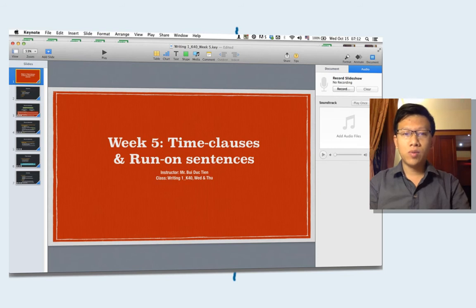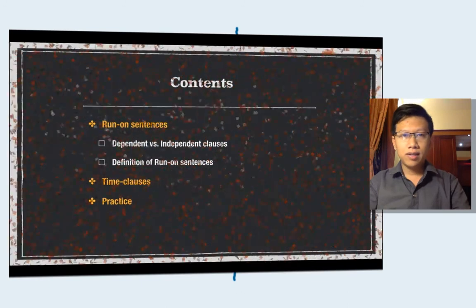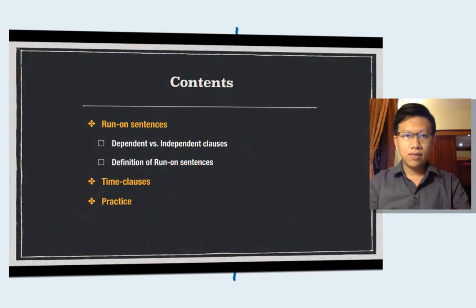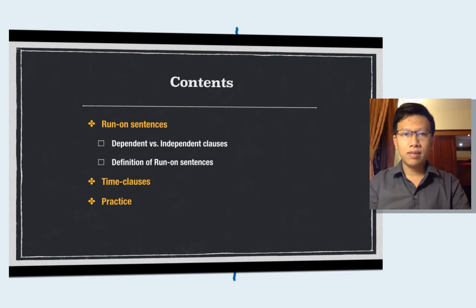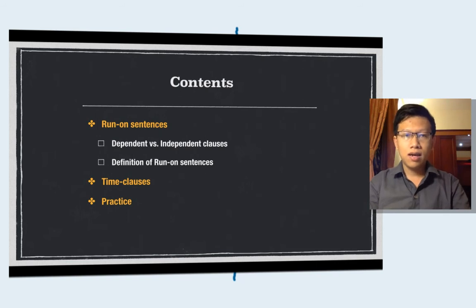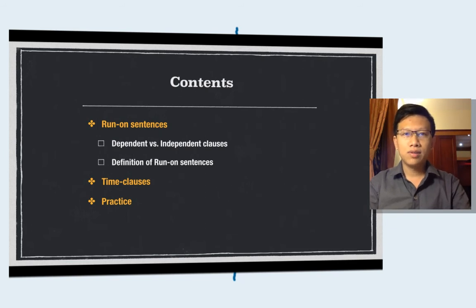The video is designed for Writing 1 K40 on Wednesday and Thursday as well. Today I'll try to cover two major pieces of information: random sentences by looking at dependent and independent clauses, then I'll give a little definition of random sentences. About the time clauses, a brief revision of the time signifiers in English and the tenses used in time clauses. Finally, you're going to be doing some practice for yourself.